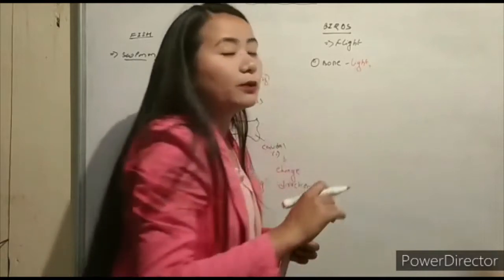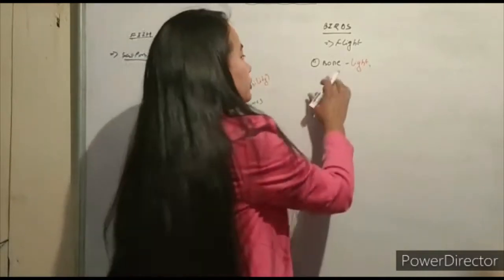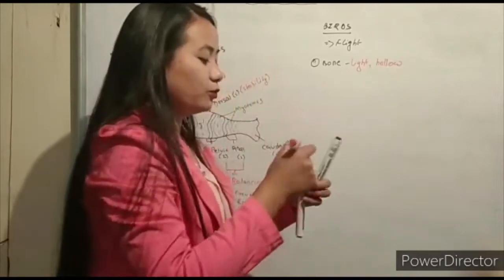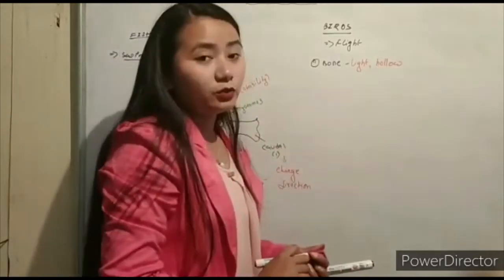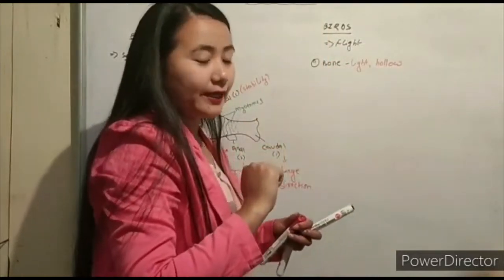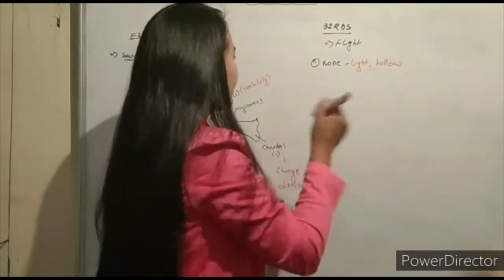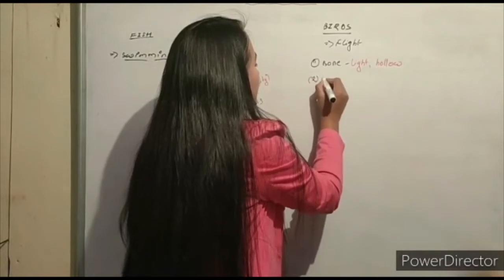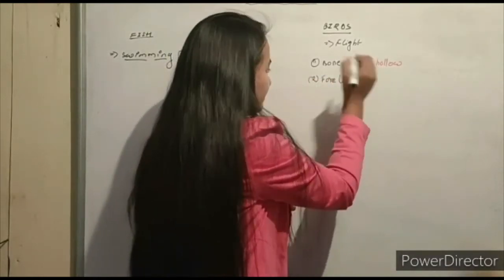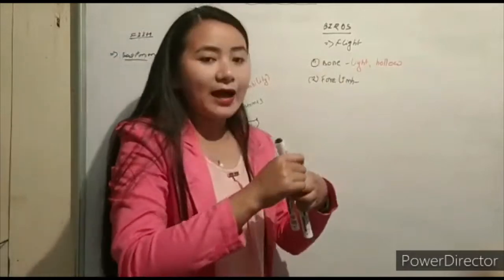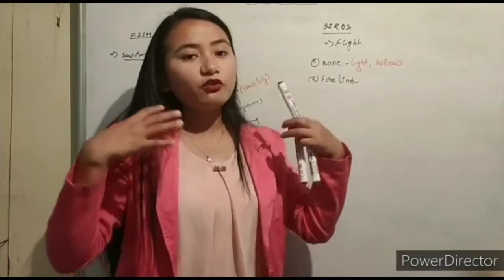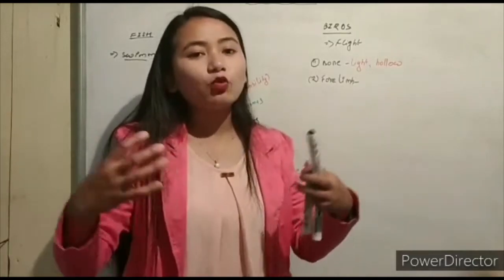The first special structure is that the bones of birds are hollow. Because they are hollow, the bones are lightweight. The second important modified structure is the forelimb — the forelimb is modified into wings, converting the forelimb into wings.